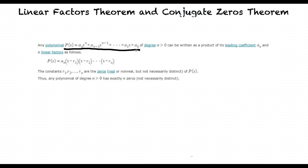The Linear Factors Theorem states that any polynomial in this form of degree n where n is greater than zero can be written as a product of its leading coefficient and linear factors as follows. P of x is equal to a sub n times x minus r sub 1 times x minus r sub 2 all the way up to x minus r sub n.